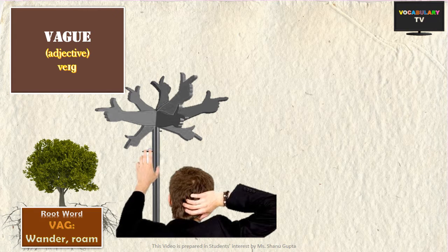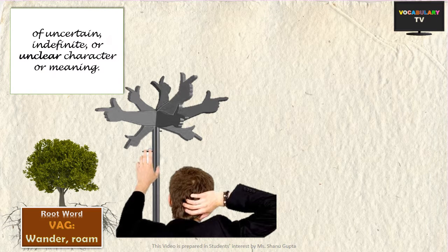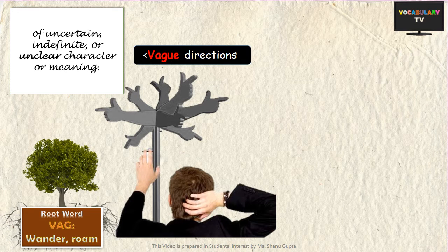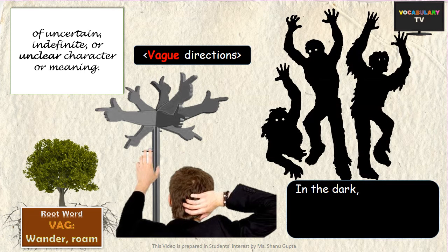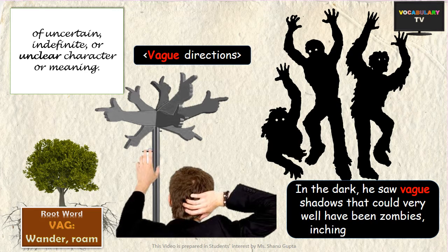Next, let's discuss 'vague,' which is one of the common words in English based on this root. If something is vague, it is uncertain or unclear in its meaning or character. For example, someone might give you vague or unclear directions for your destination. Another example: 'In the dark, he saw vague shadows that could very well have been zombies inching towards him.' Here, 'vague' means the shadows were not clearly perceptible.